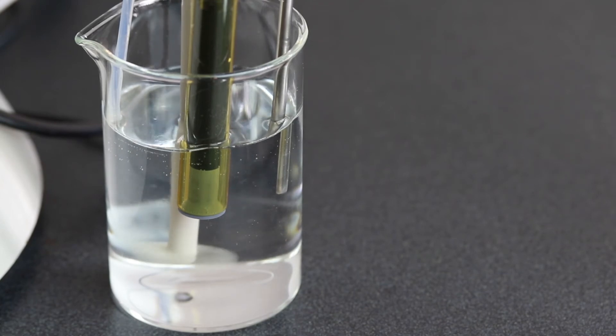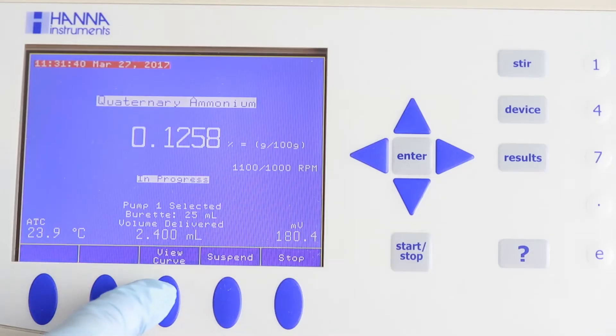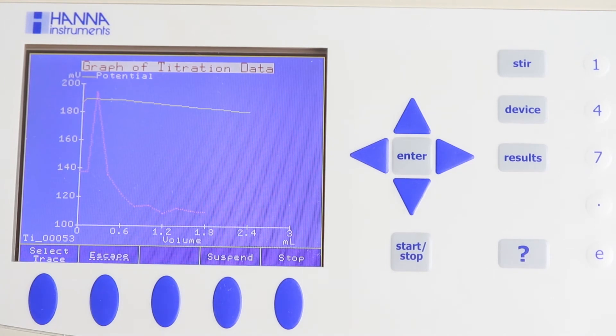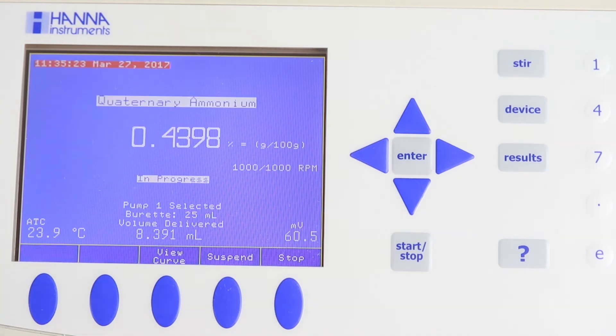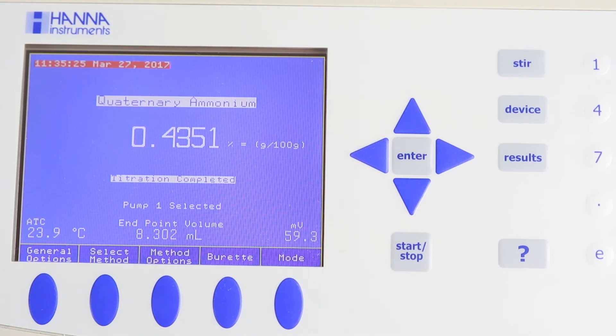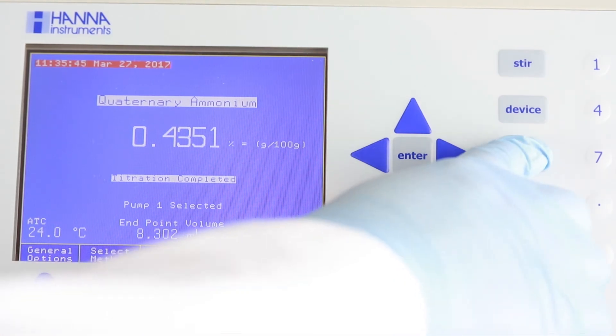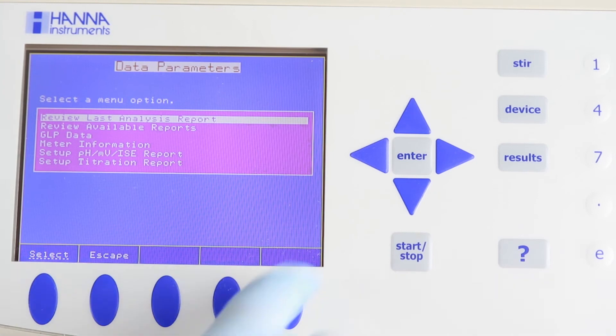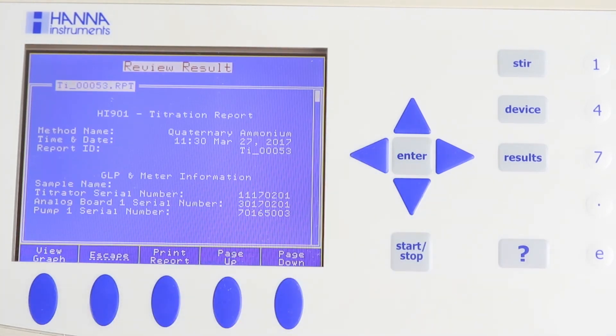While the titration runs, we can view a real-time graph as the titration progresses and also a running tally of our results. And now, our titration is complete. A full titration report is automatically generated each time and can be transferred onto a USB drive or PC.